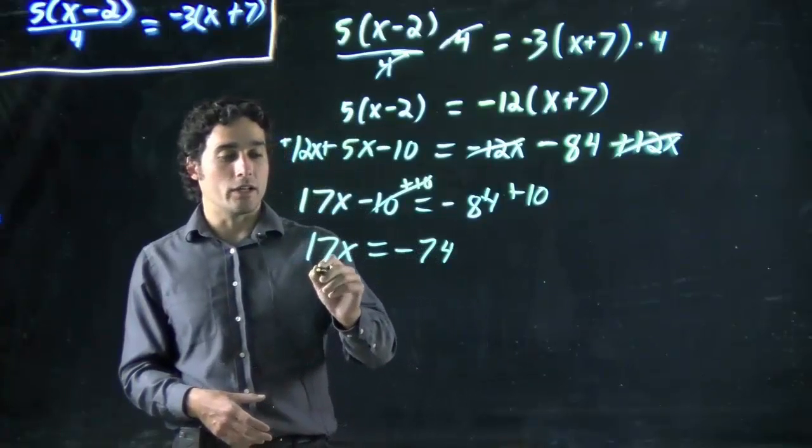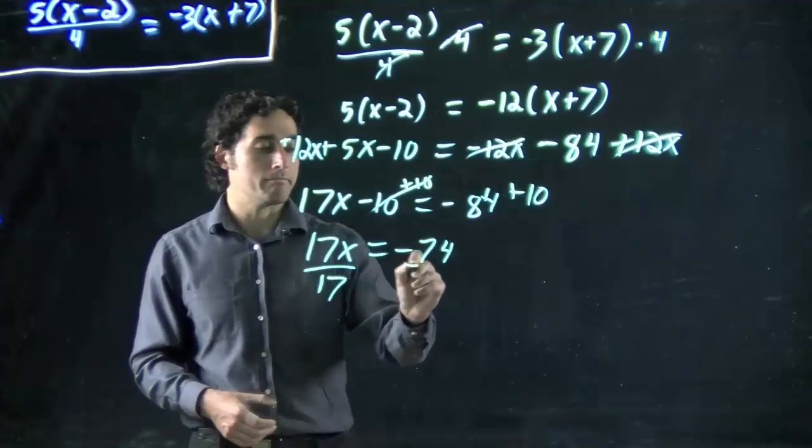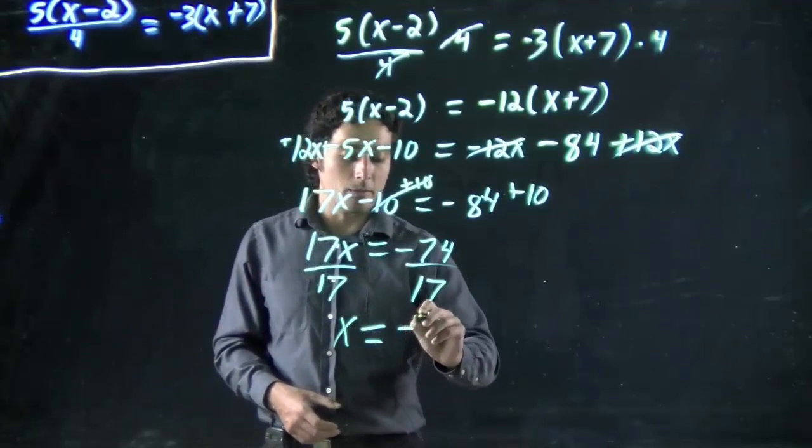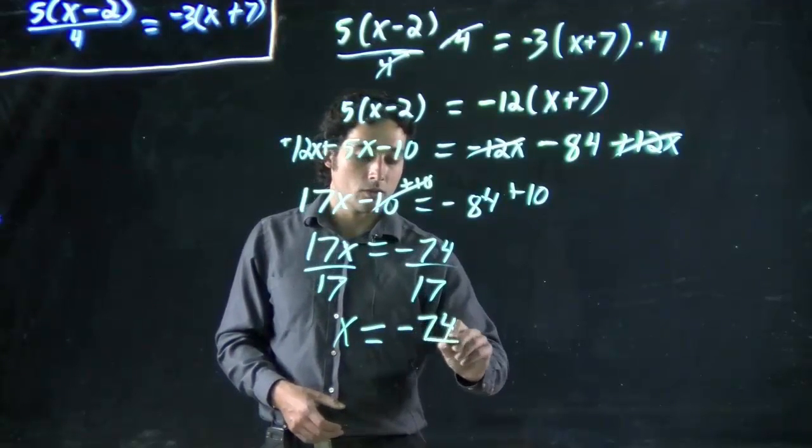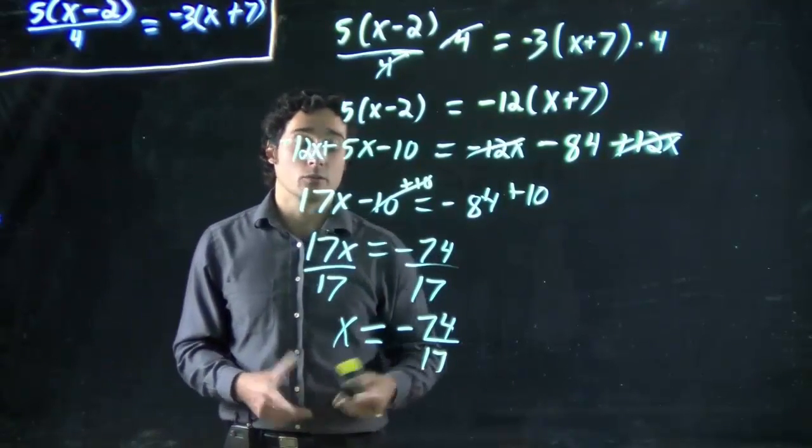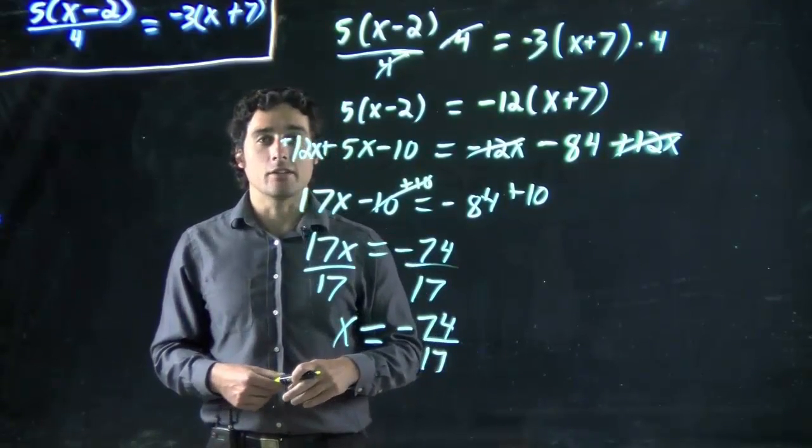Now, if I want x on its own, divide by 17. And I get x equals minus 74 over 17. And that does not reduce. So, we are stuck. Thank you.